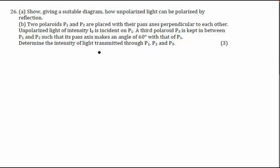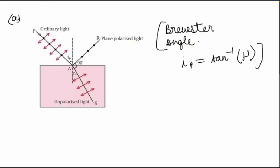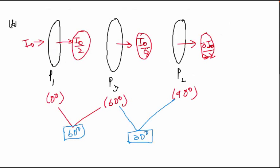So this is how we would be giving the answer to the second part that was asking us to determine the intensity of the light transmitted through P1, P2, and P3 that we have done using Malus's law. So that will be the answer to our question.